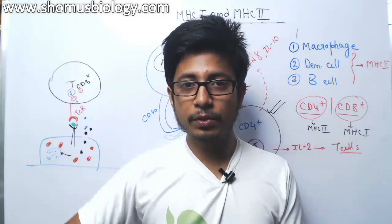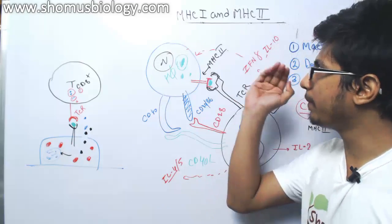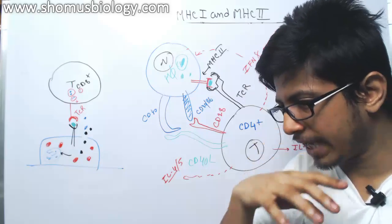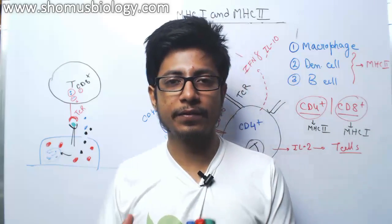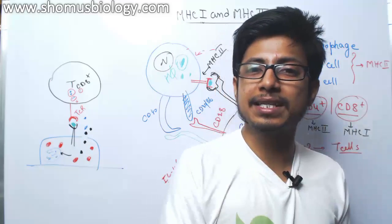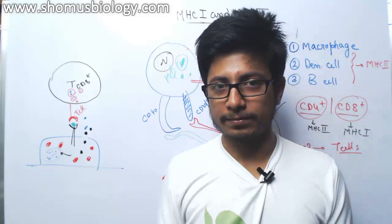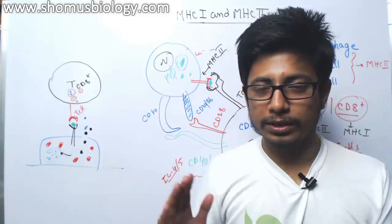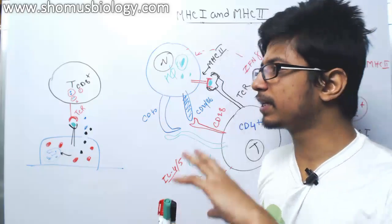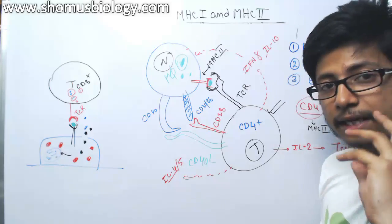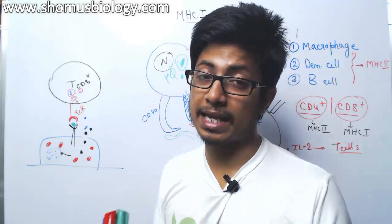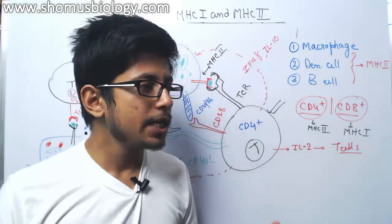In this video, I want to talk about MHC 1 and MHC 2, because with the help of these two different surface receptors, antigen presenting cells can present antigen. So what are MHC 1 and MHC 2? These are nothing but a kind of glycoproteins that are found on the surface of eukaryotic cells with a nucleus.